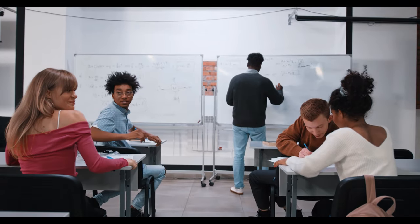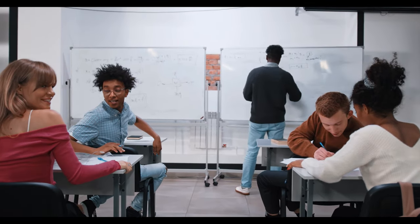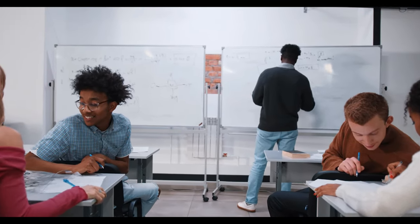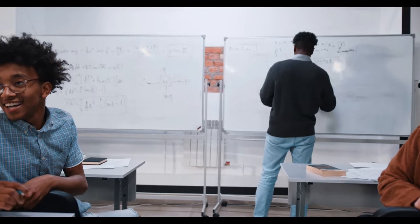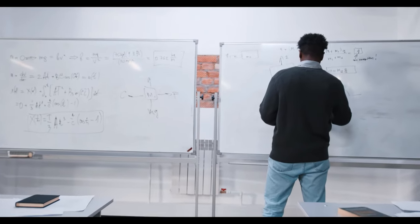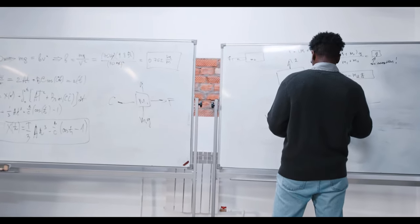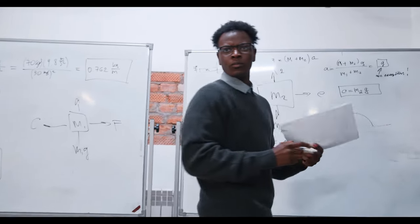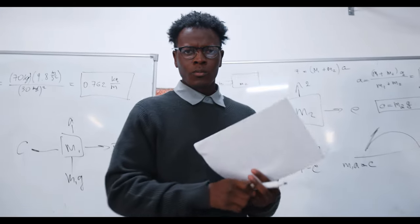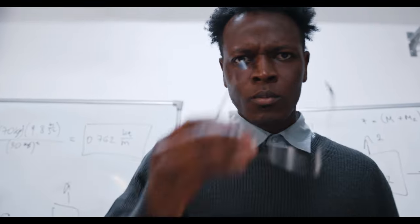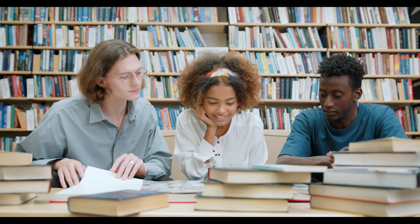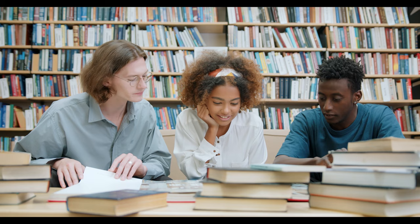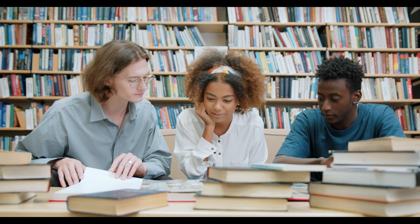Remember, this pattern applies to all regular verbs. Let's try another one: 'machen,' which means 'to do.' Following the same pattern, we get: ich mache, du machst, er macht, wir machen, ihr macht, and sie machen. Now we encourage you to choose a regular verb and try conjugating it yourself. Pause the video if you need more time, and when you're ready, press play to continue.